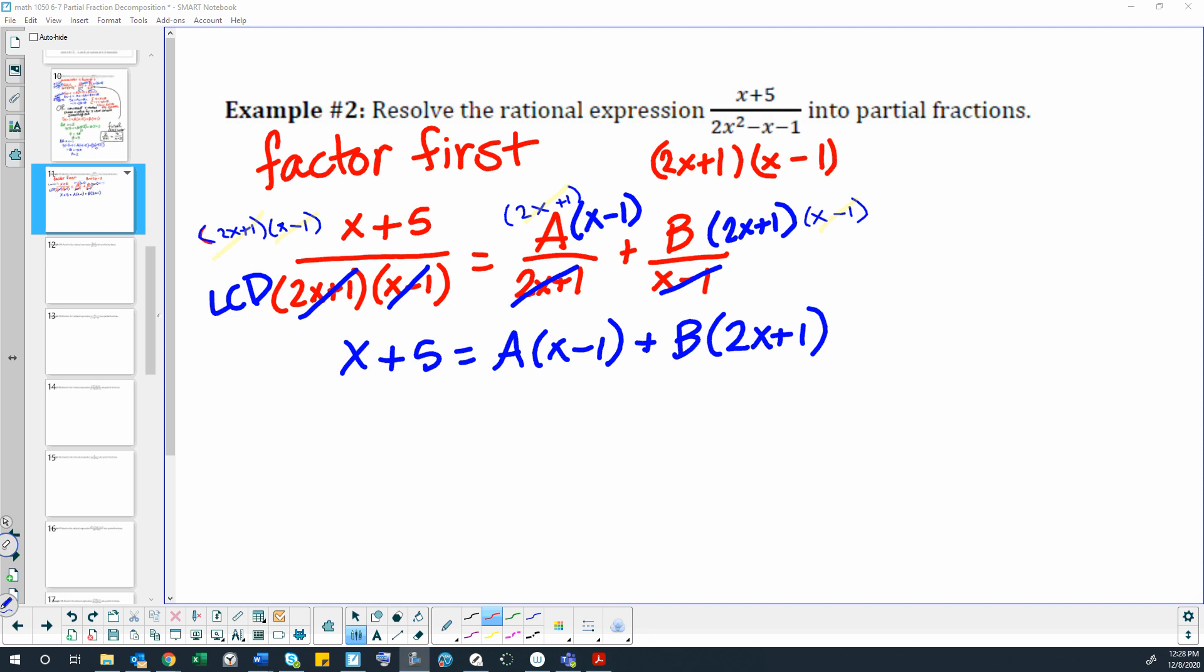This time our denominator is not factored, so we need to start by factoring it. So we factored it into two linear factors, 2x plus 1 and x minus 1.